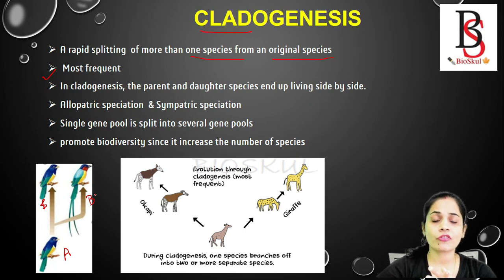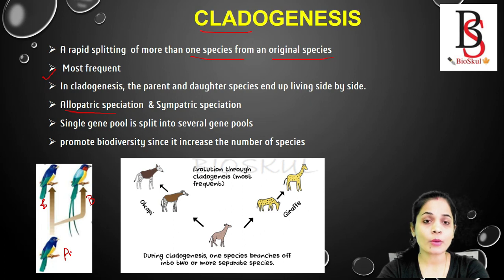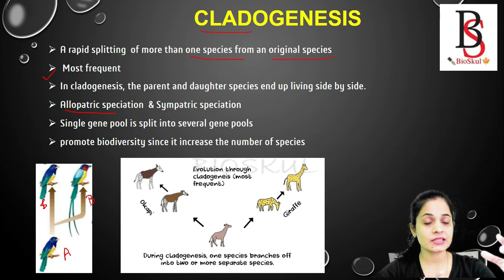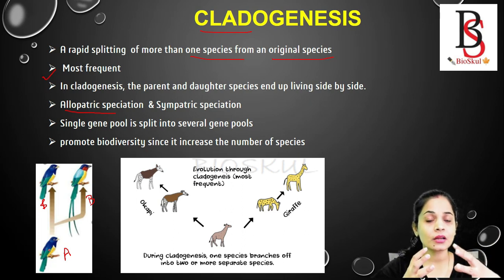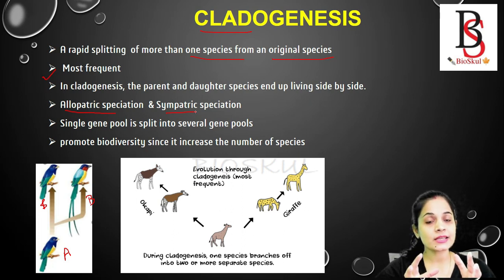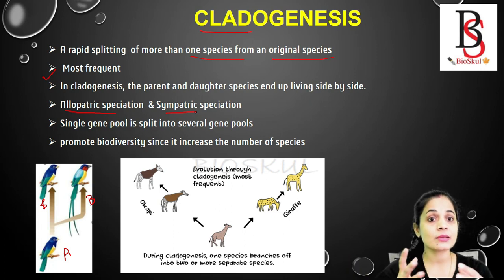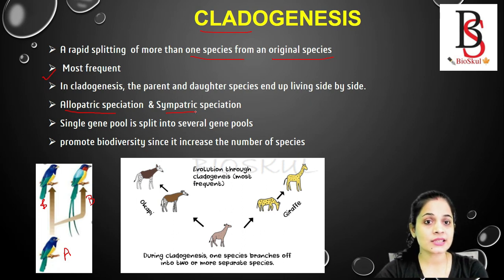Cladogenesis leads to the formation of new species. It can occur because of geographical barriers — allopatric speciation — where a geographical barrier separates a species and, over time, the isolated population forms a new species. It may also occur due to sympatric speciation, where both species are present in the same habitat with no geographical barrier, but because of mutation, one species branches into two different species. So mutation and geographical barriers both lead to cladogenesis.